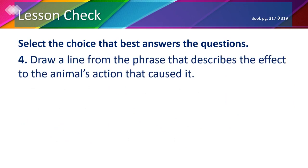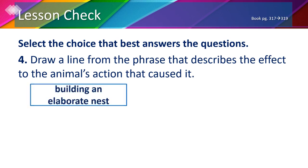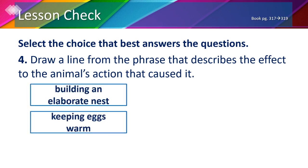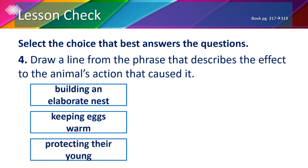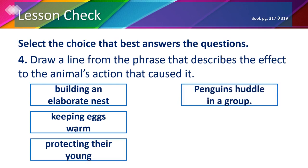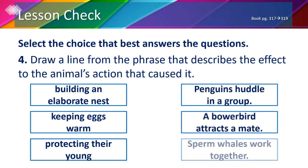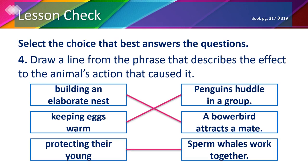Number 4: match each effect to the animal action that caused it. Because the bowerbird wants to attract a mate, it builds an elaborate nest with lots of decorations. Because the penguins huddle in a group, they keep the eggs warm. And because the sperm whales work together, they protect their young.